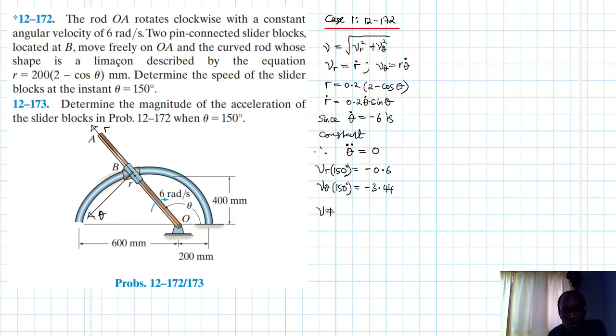So with these two, we are able to find the magnitude. We know that this is just equal to the square root of Vr squared plus Vθ squared. And therefore, V is just going to be equal to the square root of 0.6 squared plus 3.44 squared. We have 3.49 meters per second.